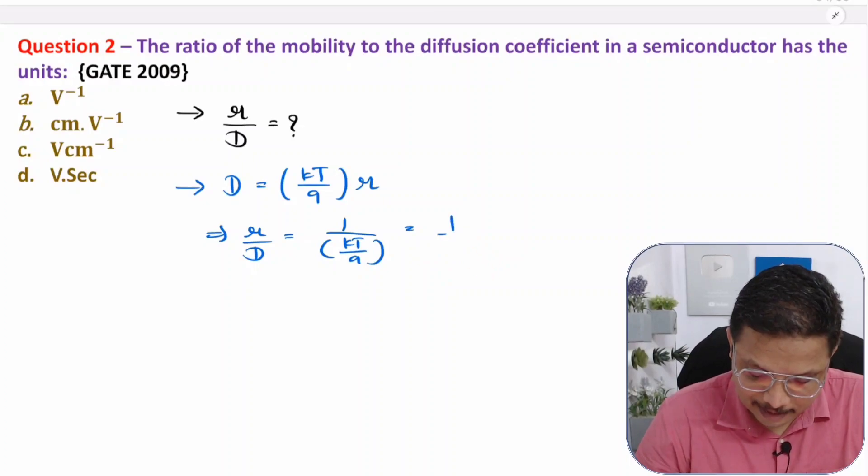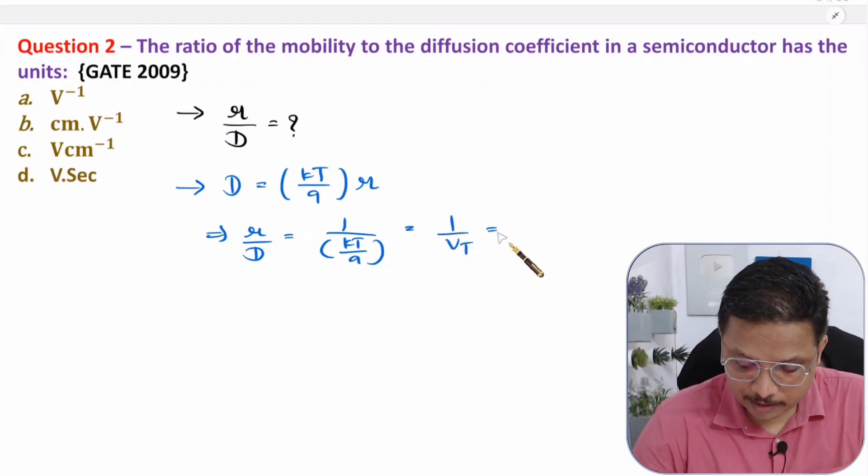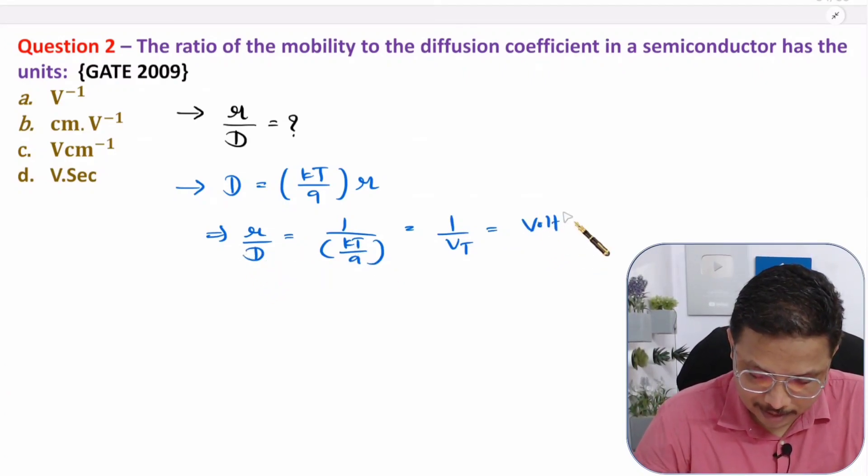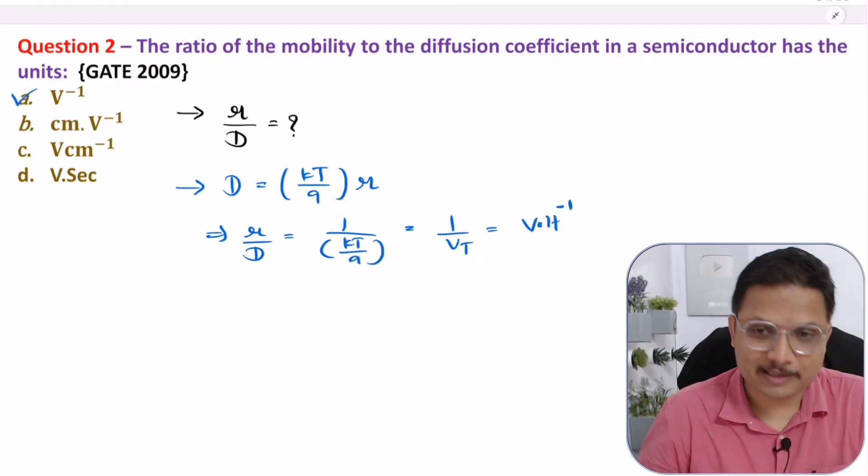That is thermal voltage, and thermal voltage has the unit volt. So the unit will be volt⁻¹ or V⁻¹. So the correct option is this.